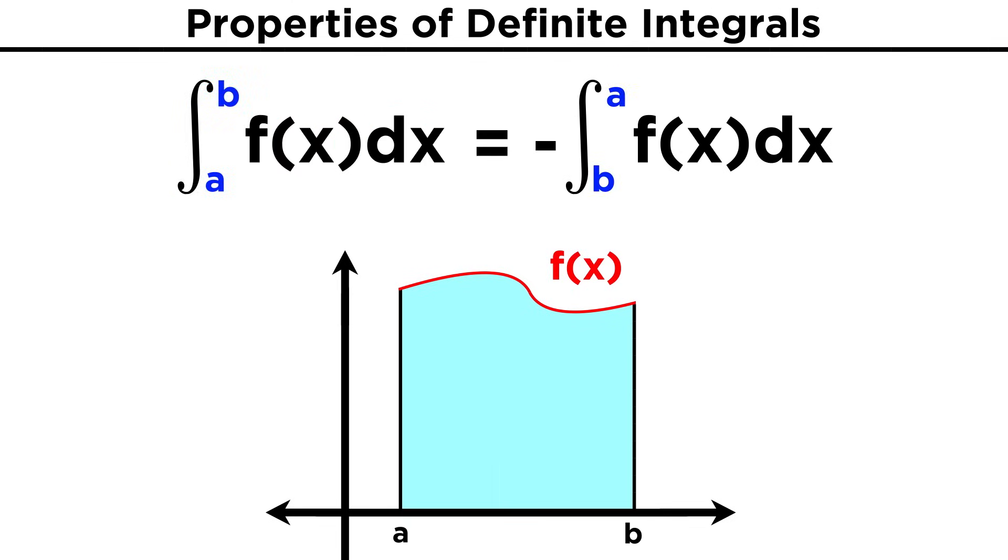then if we switched the limits of integration, integrating instead from b to a, this will be the same as the first integral, but negative. This is because we are integrating in the opposite direction.